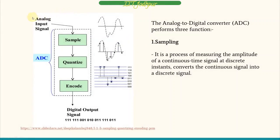We give the analog input to the ADC — the analog to digital converter. The first step is sampling. Sampling is a process of measuring the amplitude of a continuous time signal at discrete instances to convert it from a continuous signal into a discrete signal. We can see in the figure that this was our real input and we took samples at different instances of time.